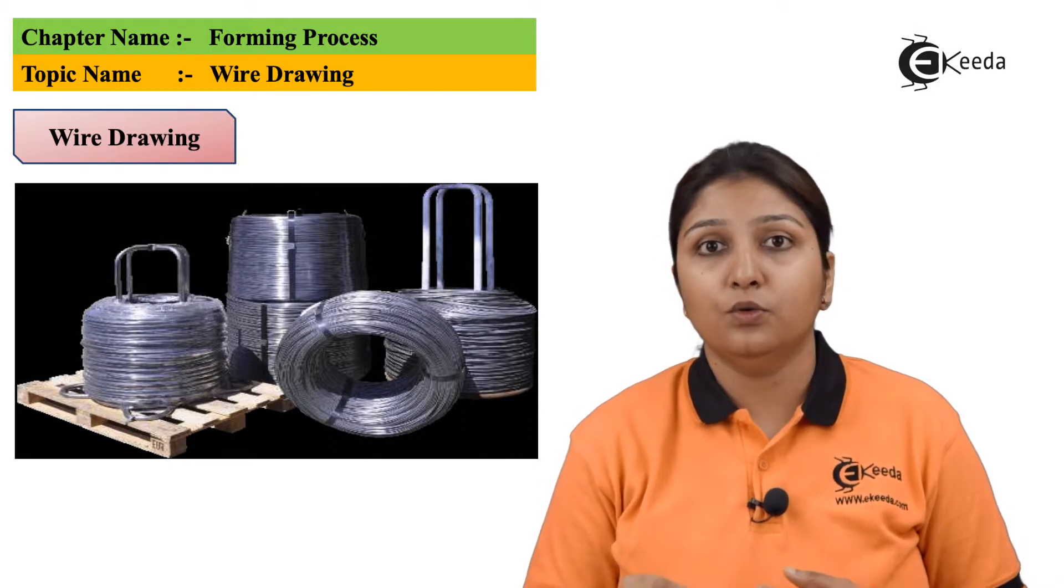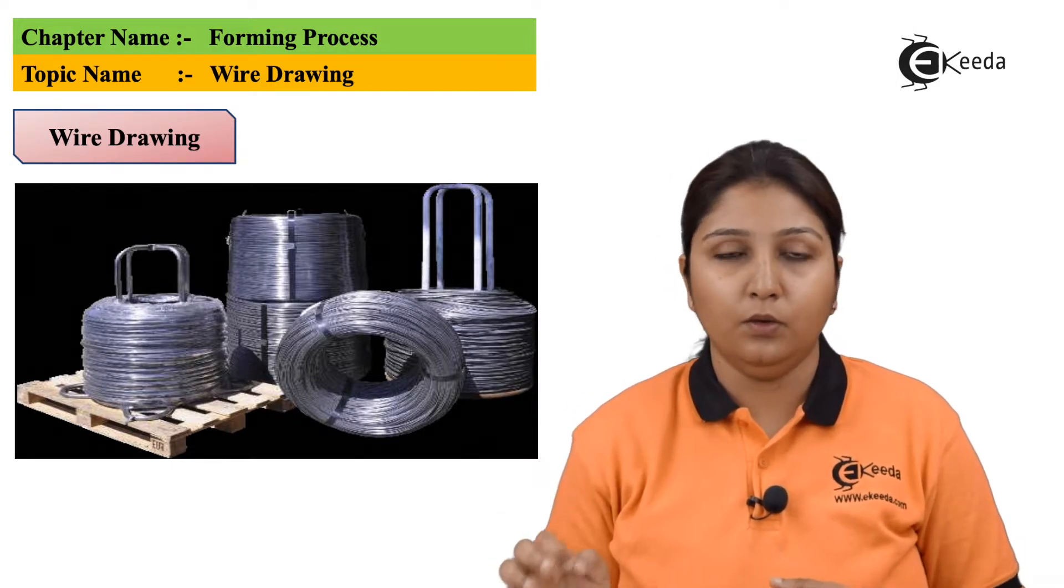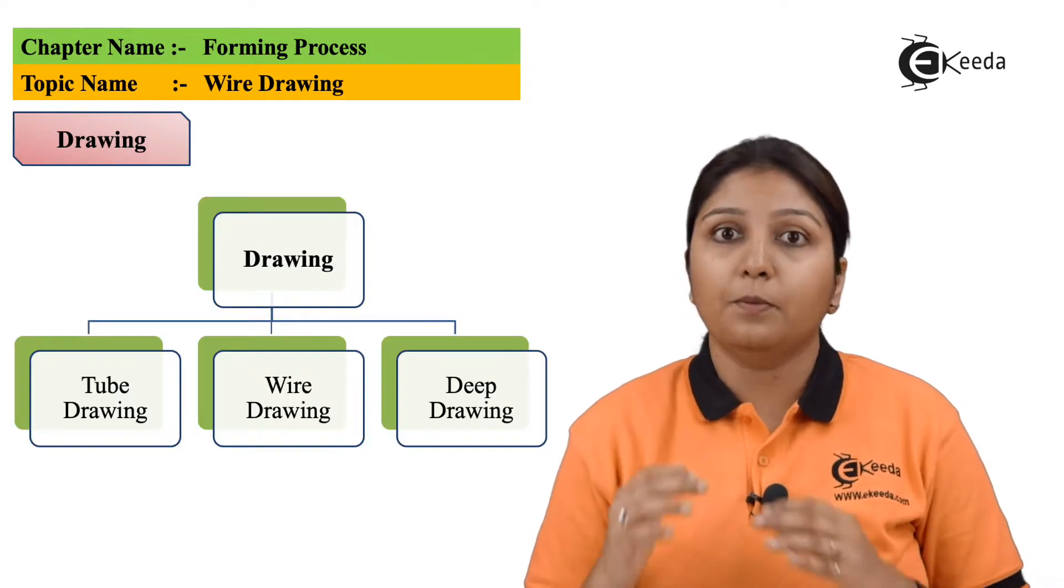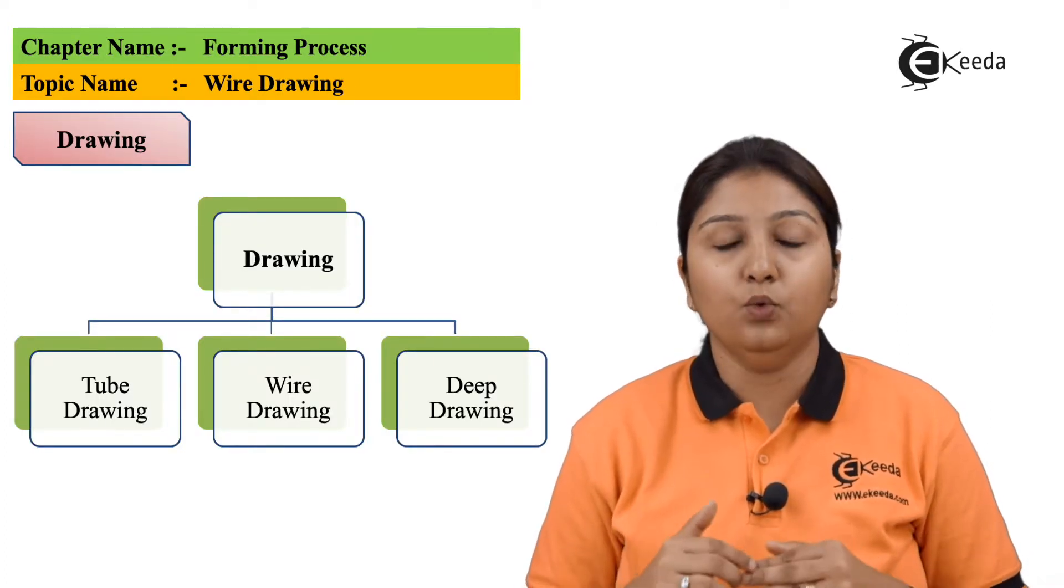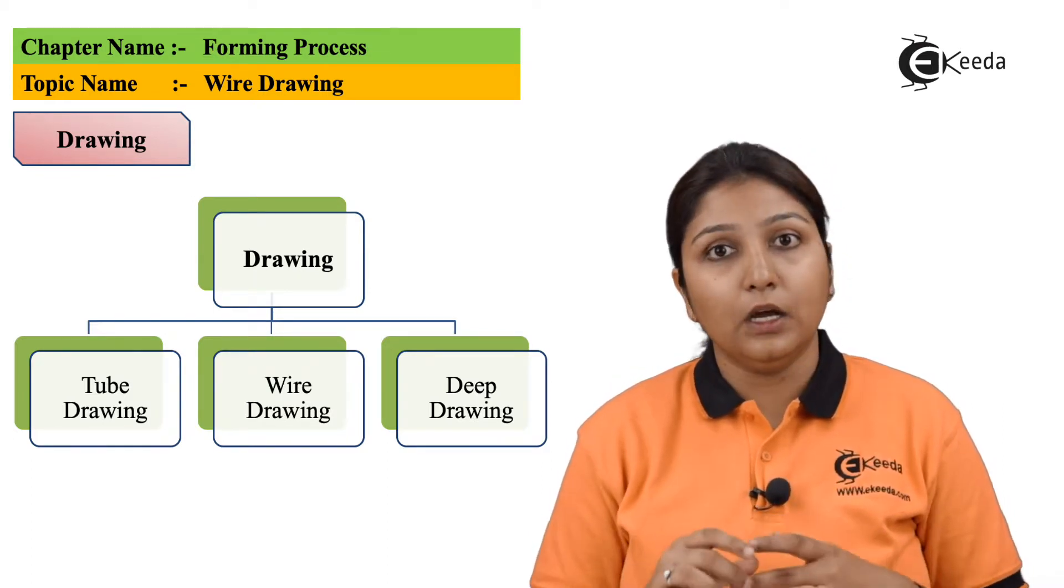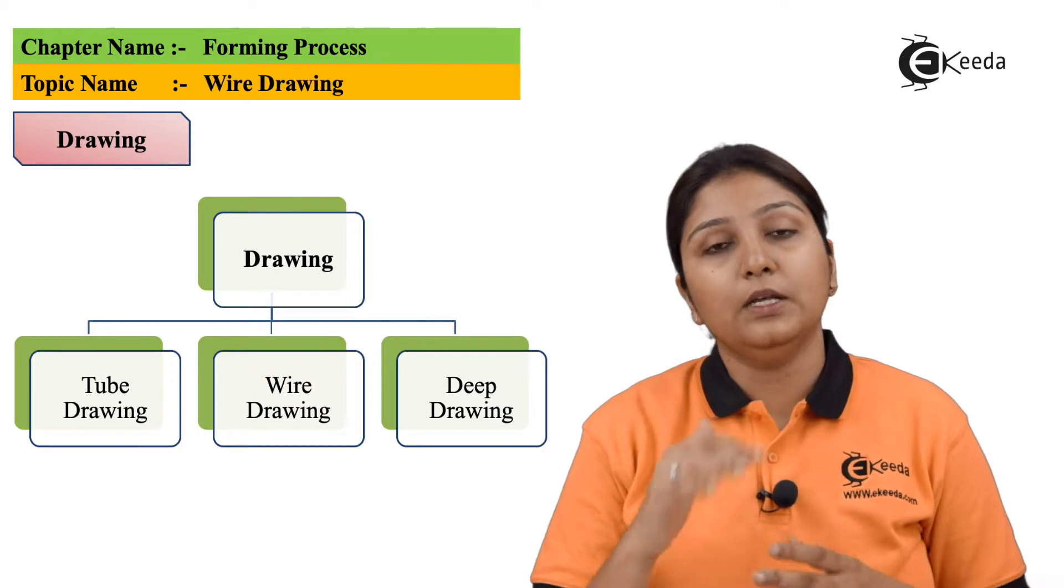This is also known as extruded wire which is drawn through a series of reduction. Wire drawing process is classified into three types: one is tube drawing, second is rod drawing, and third is deep drawing. So these are the basic three processes of drawing.